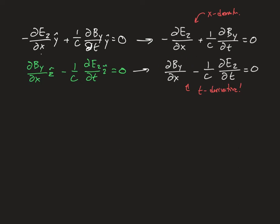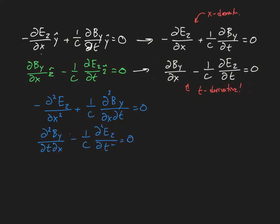If I take a t derivative of the first equation, I get ∂²By/∂x∂t. If I take an x derivative of the second equation, I also get ∂²By/∂x∂t — since derivatives commute it doesn't matter what order I take them. So I can eliminate the magnetic field completely by substituting, because the same term appears in both equations. Taking the x derivative gives a second x derivative of By and a mixed derivative of Ez; taking the t derivative gives a second t derivative of By and a second time derivative of Ez.